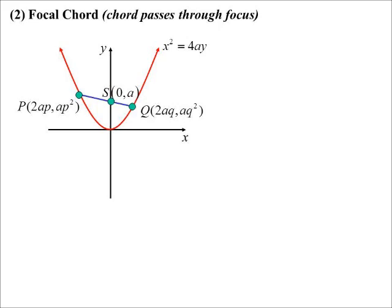If you see a focal chord question, they're usually trying to get us to prove a particular property. And that property is that pq equals negative 1. So the parameters multiply together to give negative 1. So in a focal chord question, I'd go and find my slope. We just did it in the last question, so I'm not going to redo it. But we'd end up showing it's p plus q on 2.